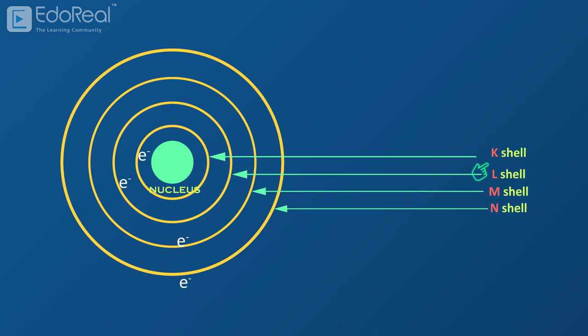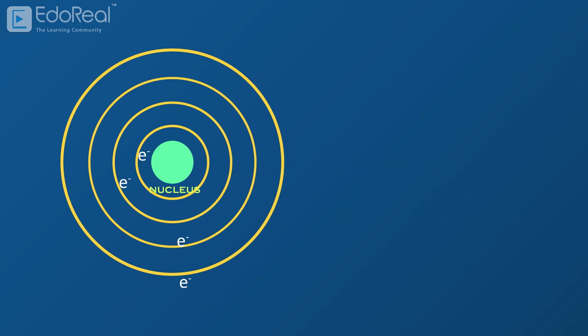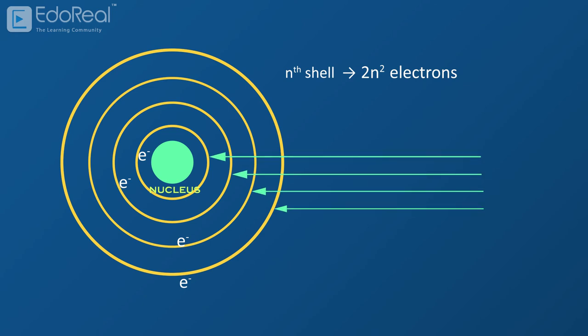So the names of shells are as follows. The general formula is that the Nth shell in principle can hold up to 2 N square electrons. According to this, the K shell can hold up to 2 electrons, the L shell can hold up to 8 electrons, the M shell can hold up to 18 electrons, and so on.